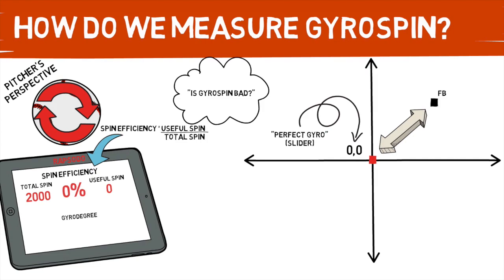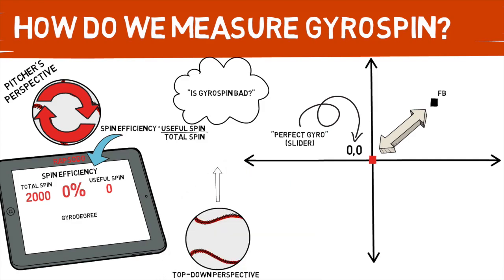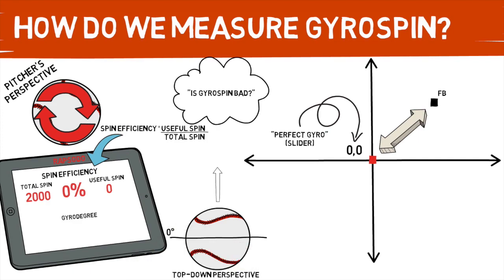Now let's take a look at that gyro degree metric. This is a new idea added by Rapsodo when they transferred over to the 2.0, and it is one that has brought with it a ton of confusion to users everywhere. When looking at gyro degree, it's easiest to picture it from the top down. A perfectly perpendicular spin axis is going to give you a reading of zero gyro degrees for both a lefty and a righty. Then perfect gyro spin would have a gyro degree of 90 degrees — this is your perfect gyro spin slider. A cutter falling between a fastball and slider would read at 45 degrees for a righty and negative 45 degrees for a lefty. You can picture how it goes from zero to 90 for a righty, and zero to negative 89 for a lefty, then transfers over to 90 at perfect gyro spin.